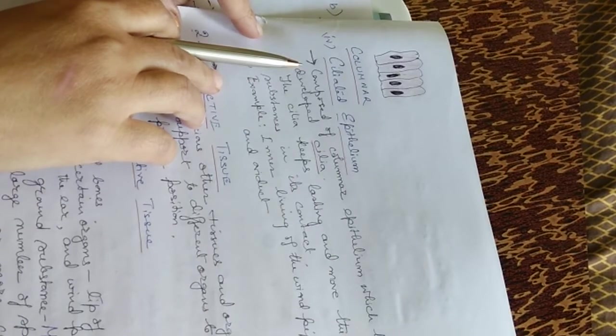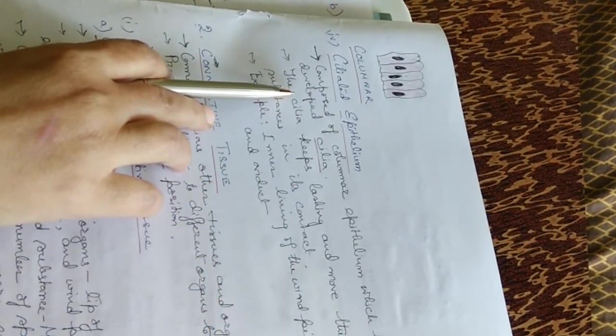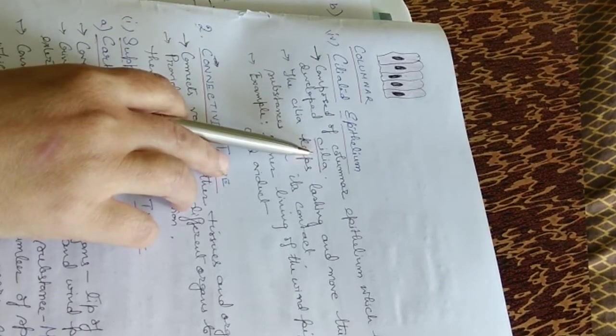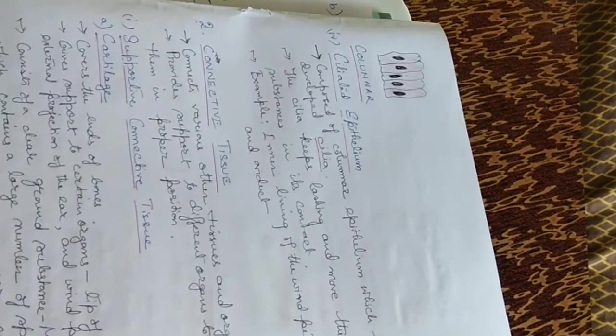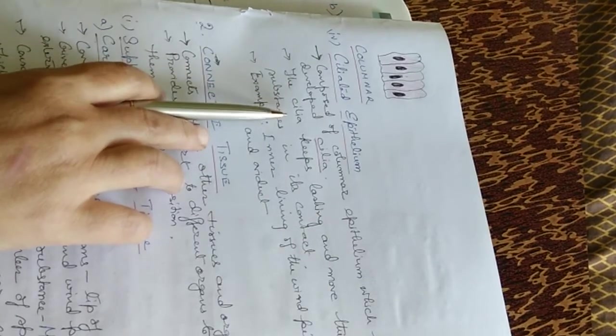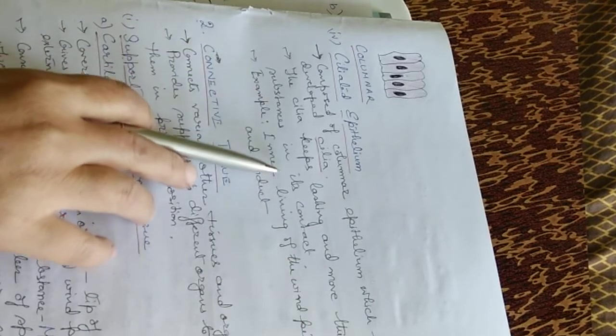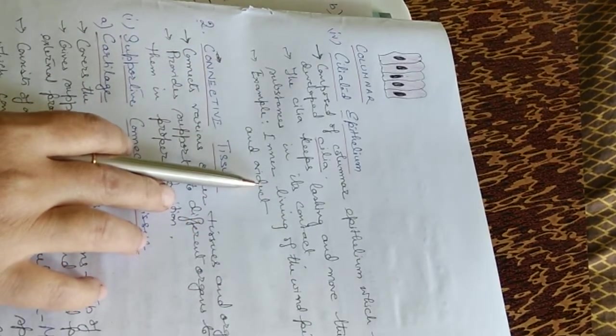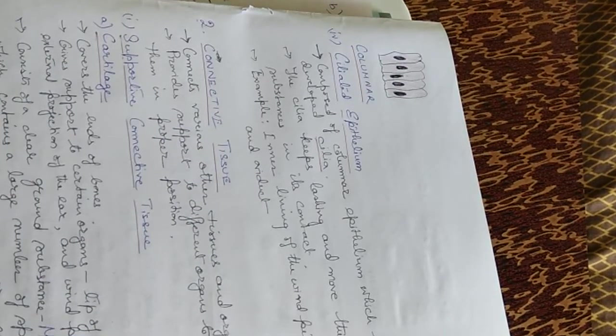The ciliated epithelium is composed of columnar epithelium which has developed cilia. The cells of the columnar epithelium, columnar cells which have developed cilia, form the ciliated epithelium. The cilia keeps lashing and move the substances in its contact. For example, they are present in the inner lining of the windpipe and oviduct.